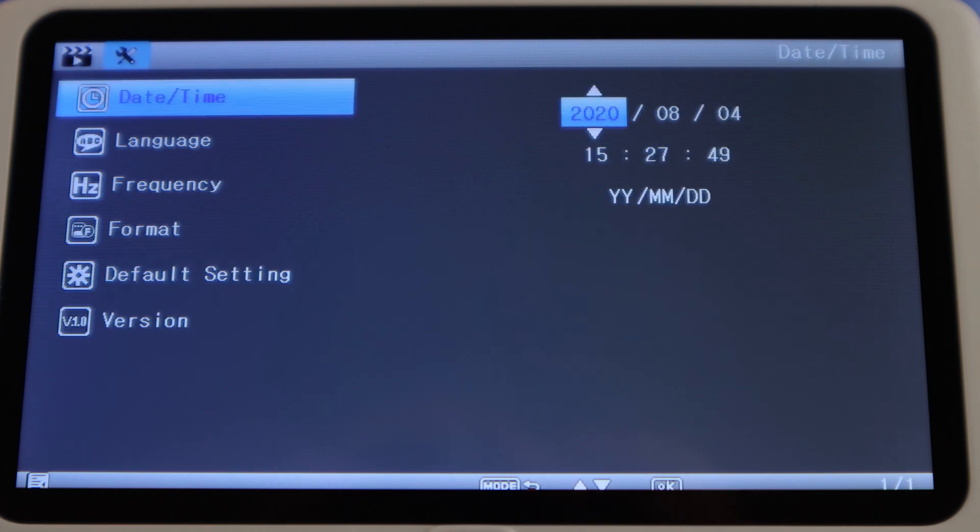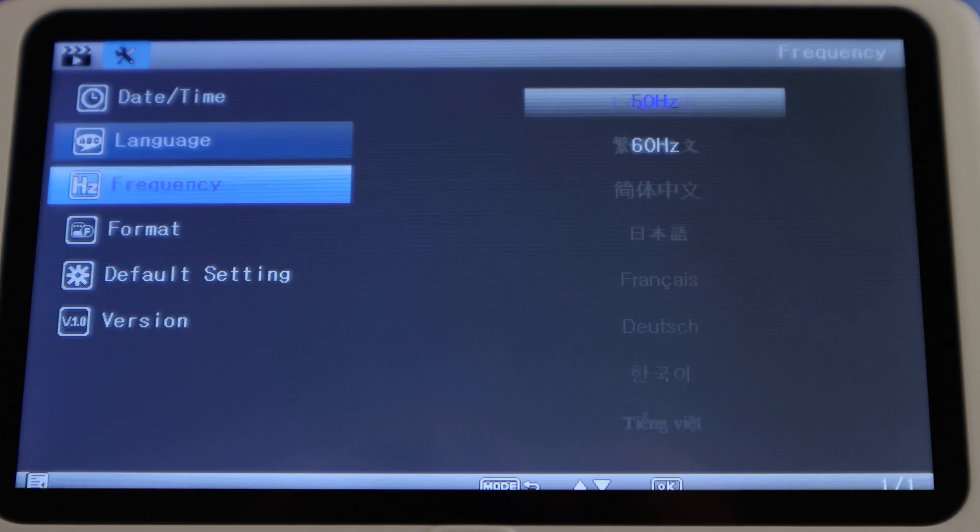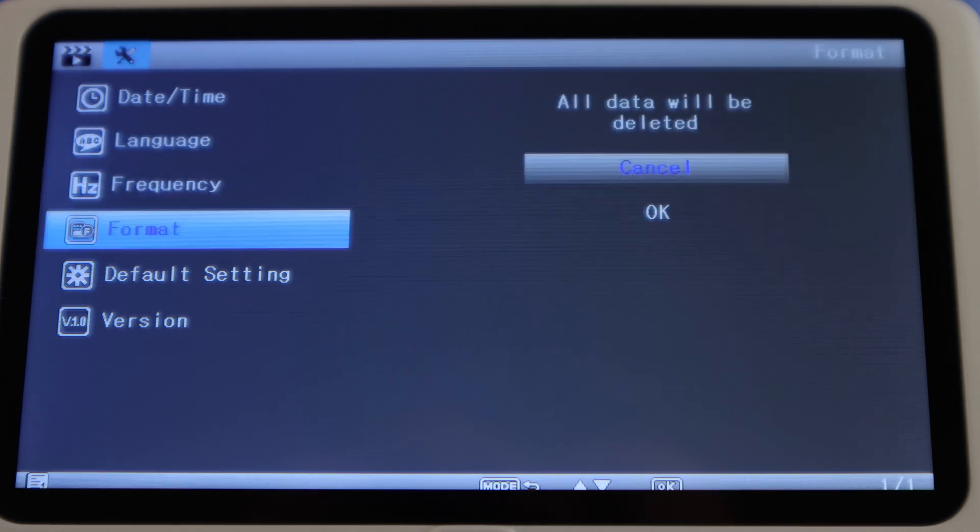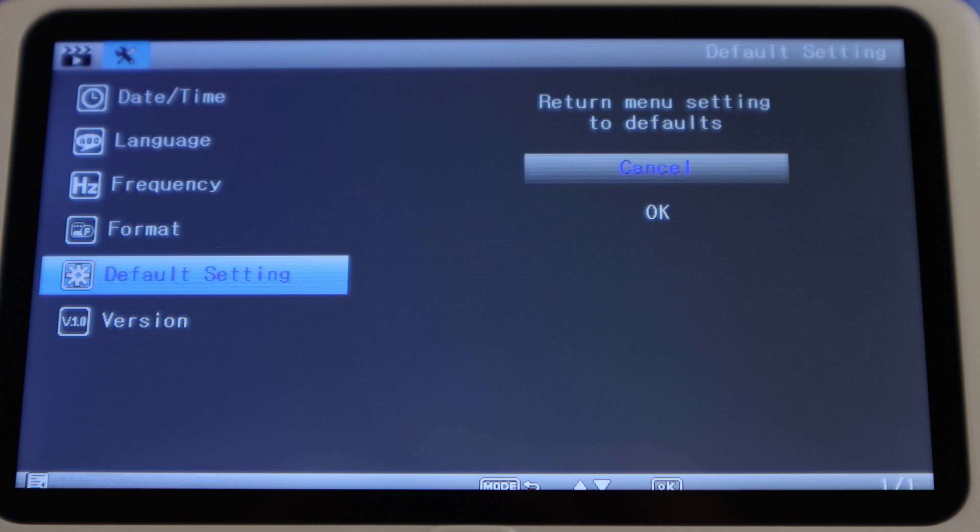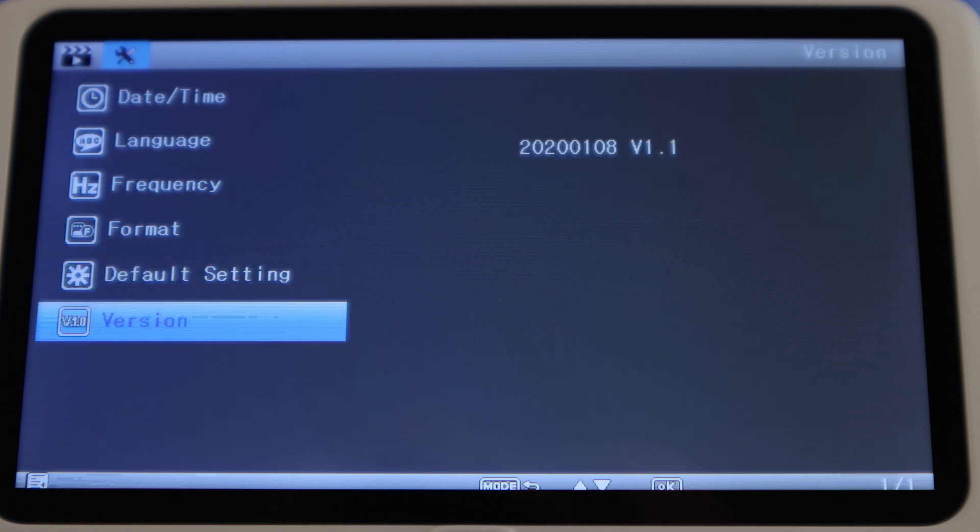In the general settings, you can set the date and time, language, display frequency, format the SD card, reset the microscope to default settings, and check its firmware version.